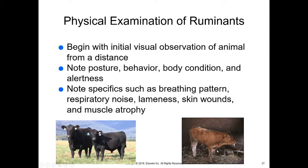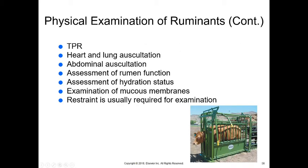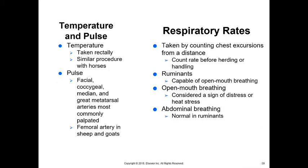For ruminants, we again begin with initial visual observation of the animal from a distance. Note posture, behavior, body condition, and alertness, as well as specifics such as breathing pattern, respiratory noise, lameness, skin wounds, and muscle atrophy. The examination includes TPR, heart and lung auscultation, abdominal auscultation, assessment of rumen function — which is a bit different because ruminants have four stomachs — assessment of hydration status, examination of mucous membranes, and use of appropriate restraint.